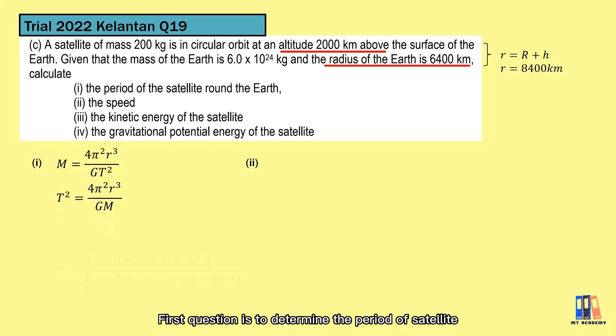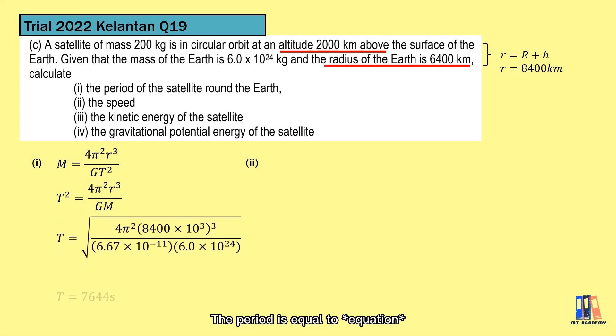First question is to determine the period of satellite. From the equation derived just now, we can rearrange it to get the expression of period and do the calculation. The period is equal to the square root of 4π²r³ over GM. In the end, the period is equal to 7,644 seconds.